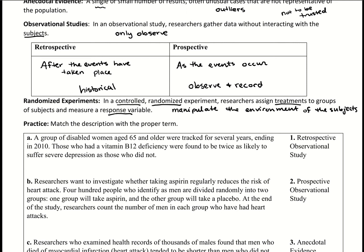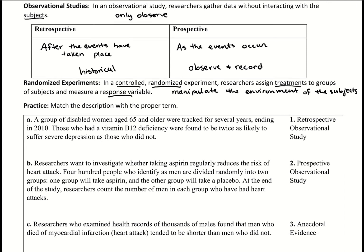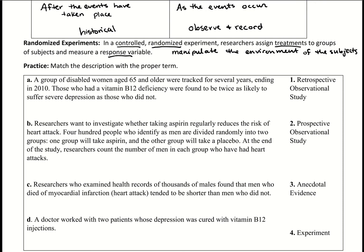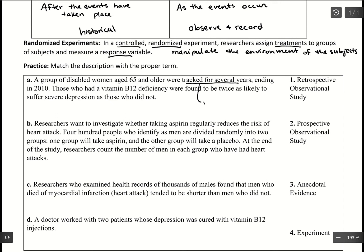We're going to look through four examples and figure out which category each belongs to — you can pause and try it yourself first. In example A, a group of disabled women age 65 and older were tracked for several years ending in 2010, and the results from while they were being tracked were used. Since they were being recorded at the time, this is a prospective observational study.